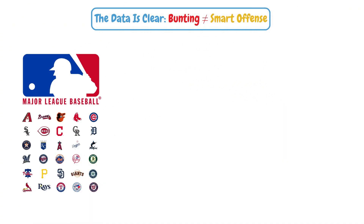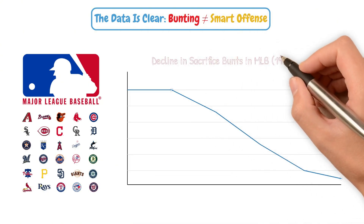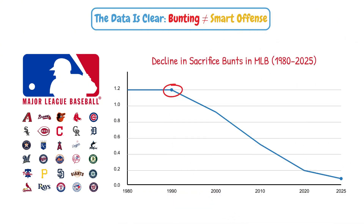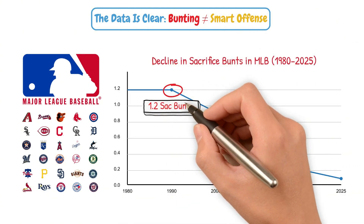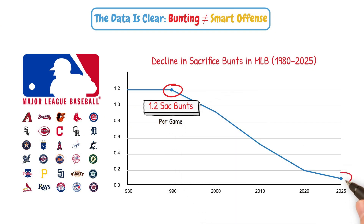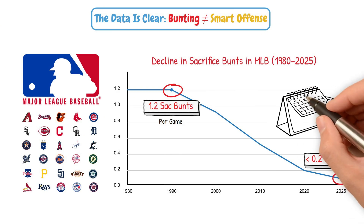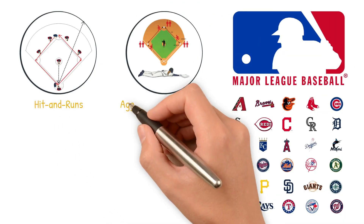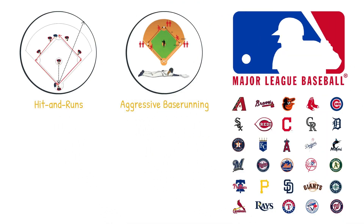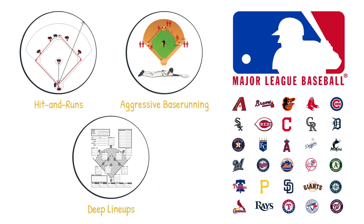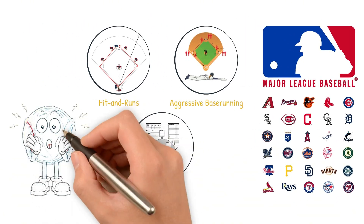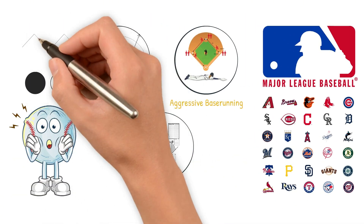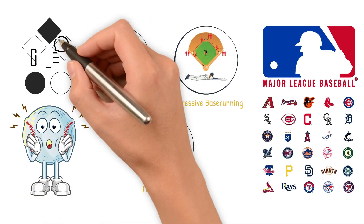MLB teams have caught on. In 1990, teams averaged 1.2 sack bunts per game. In 2025, that number has dropped to below 0.2 per game. Many teams will go weeks without a single sack bunt. They've replaced bunts with hit and runs, aggressive base running, and deep lineups that just swing away — because in today's game, giving away an out to move a runner just isn't worth it.